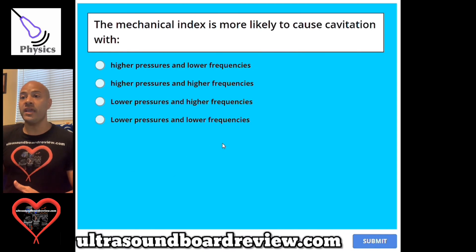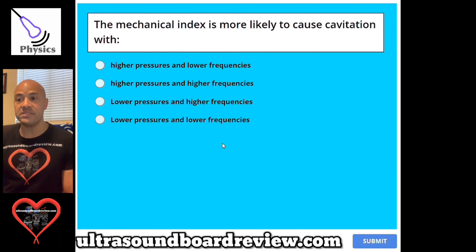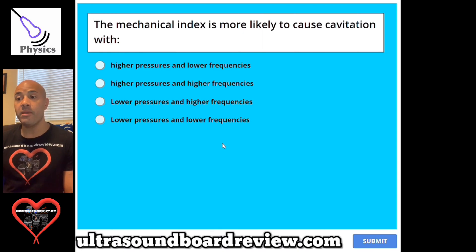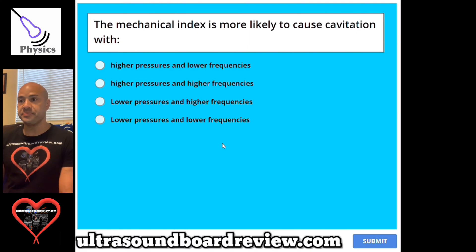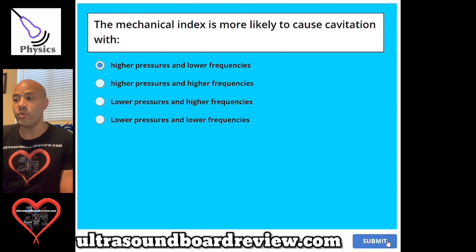Question 98. The mechanical index is more likely to cause cavitation with: A, higher pressures and lower frequencies. B, higher pressures and higher frequencies. C, lower pressures and higher frequencies. Or D, lower pressures and lower frequencies. The answer is A, higher pressures and lower frequencies.